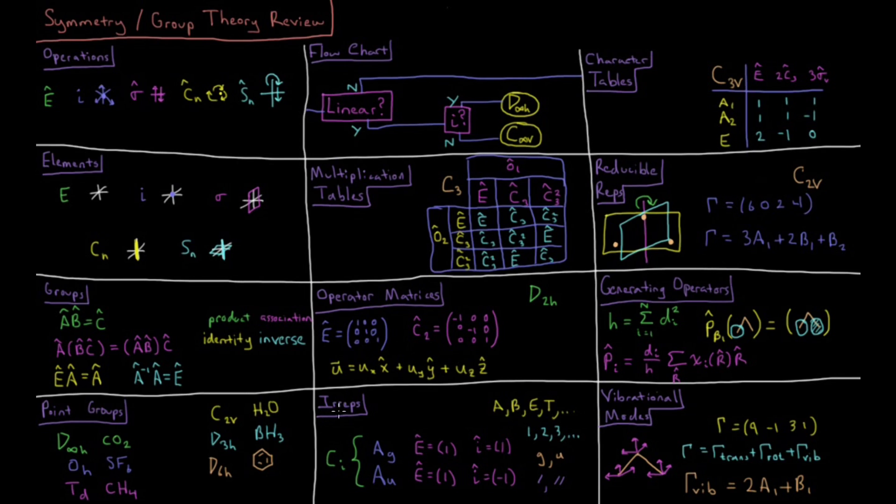So these irreducible representations come together in a thing called a character table. There's a character table for every single point group, and we have the irreps and their behavior under each of the symmetry operations of that given point group. So we have what ends up being the trace of the irreducible representation of that particular operator in that irrep becomes its character and these characters come together to form a character table.